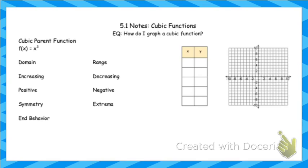To see what this graph looks like, we're going to plug in some values to a table. If I plug in 0 for x, 0 cubed gives me a y value of 0. If I plug in 1, 1 cubed gives y equals 1. Negative 1 gives y equals negative 1. If I plug in 2, 2 cubed is 8. Negative 2 cubed is negative 8.